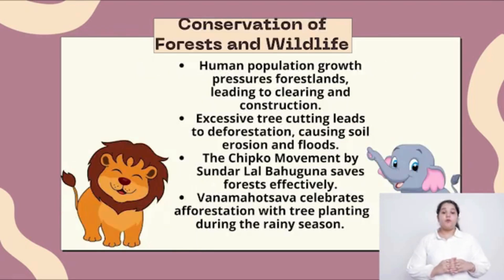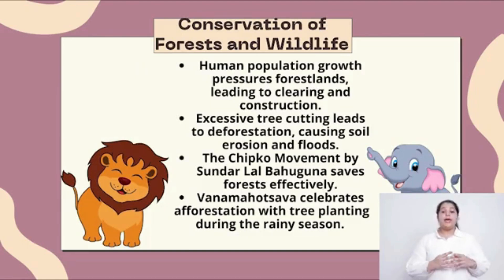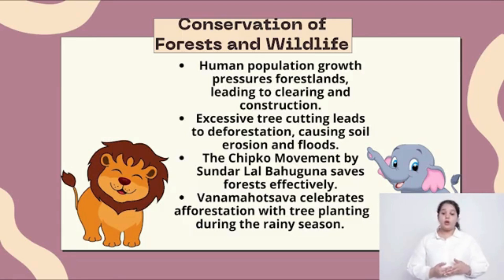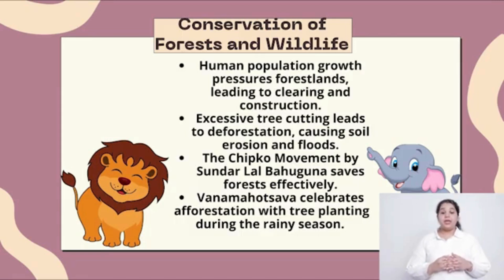Conservation of forest and wildlife. Human population growth pressures forest lands, leading to clearing and construction. Excessive tree cutting leads to deforestation, causing soil erosion and floods. The Chipko movement by Sunderlal Bahuguna saved forests effectively. Van Mahotsav celebrates afforestation with tree planting during the rainy season.